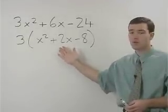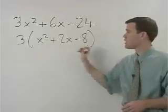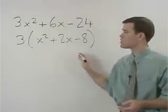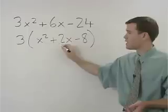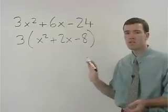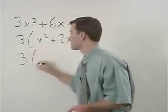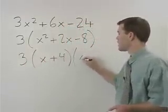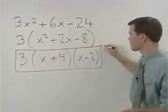Look at how much easier to deal with this trinomial is than your original trinomial. Our next step will be to factor what's in here, and all we have to do is split it up into two binomials looking for the factors of negative 8 that add to positive 2. Since those factors are positive 4 and negative 2, our final answer is 3 times x plus 4 times x minus 2, and you're done.